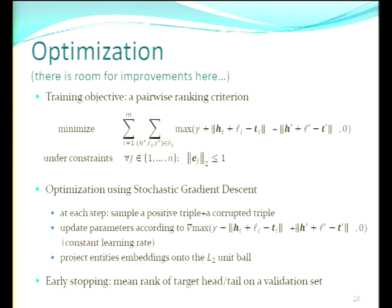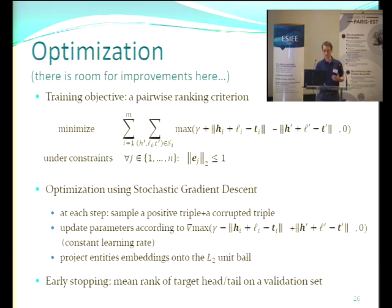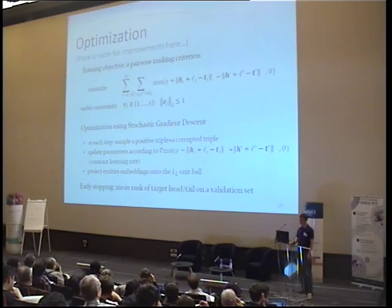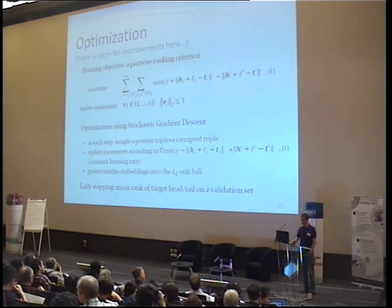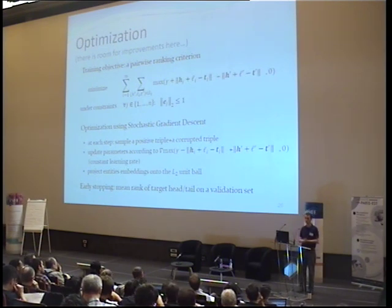Optimization is carried out with stochastic gradient descent. At each step, we sample a positive triple and one of its corrupted triples, and update the parameters according to the gradient of the loss function for only that pair. We maintain the regularization constraint that the norms of the embeddings should not be greater than one by projecting embeddings into the unit ball. We use early stopping as a stopping criterion, so we never compute the full objective function — because just computing the objective function is essentially impossible.